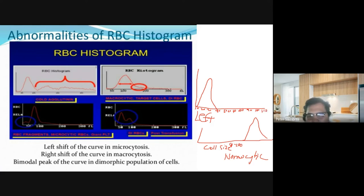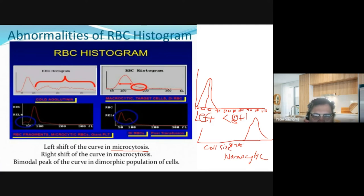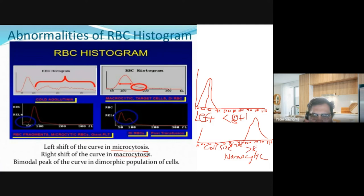If you have a shift to the left in your RBC histogram, most likely your femtoliters will be less than 80, meaning you have microcytosis — your RBCs are microcytic. If you have a shift to the right, your femtoliters will be greater than 100, meaning you have macrocytosis.